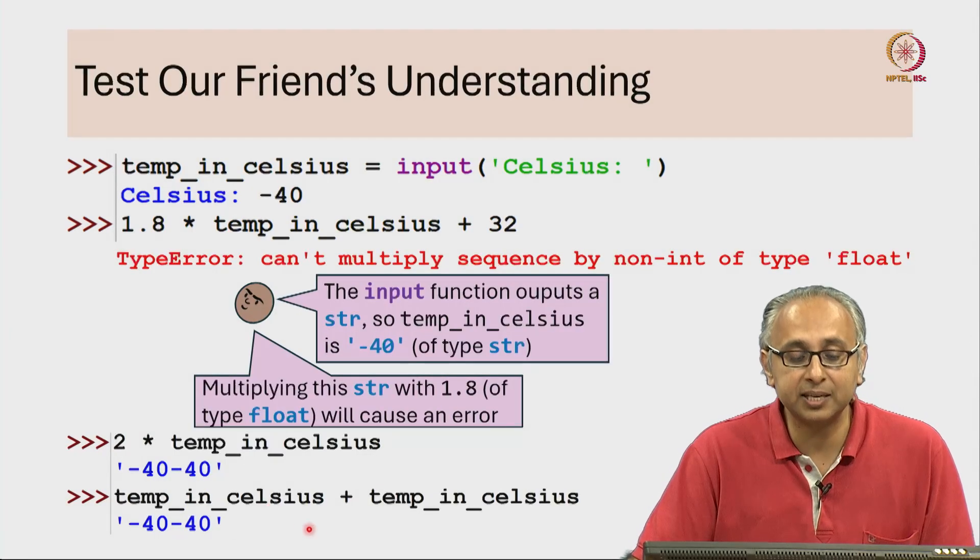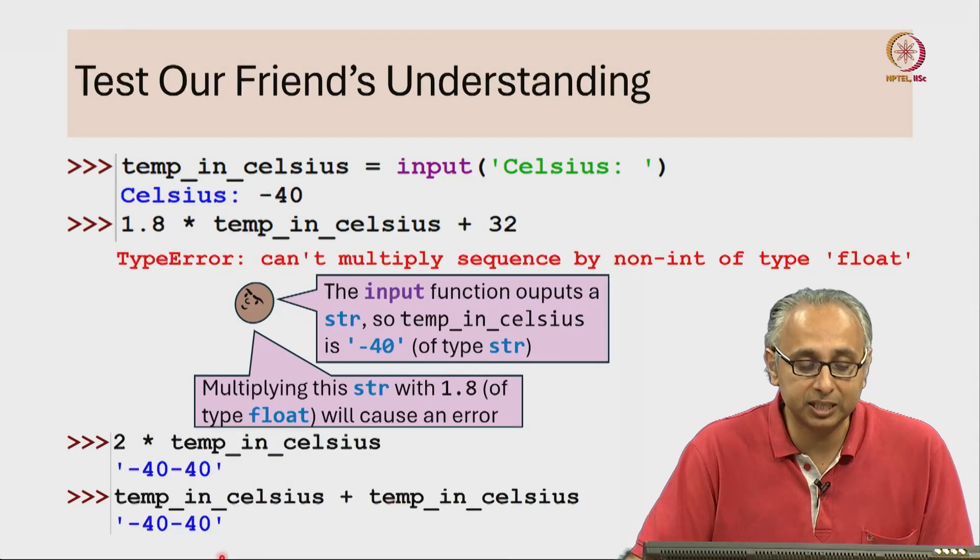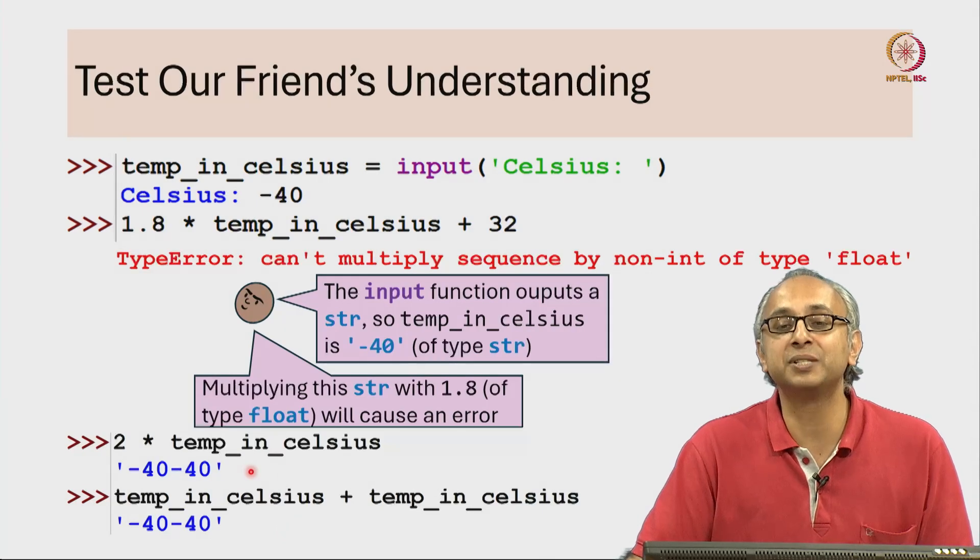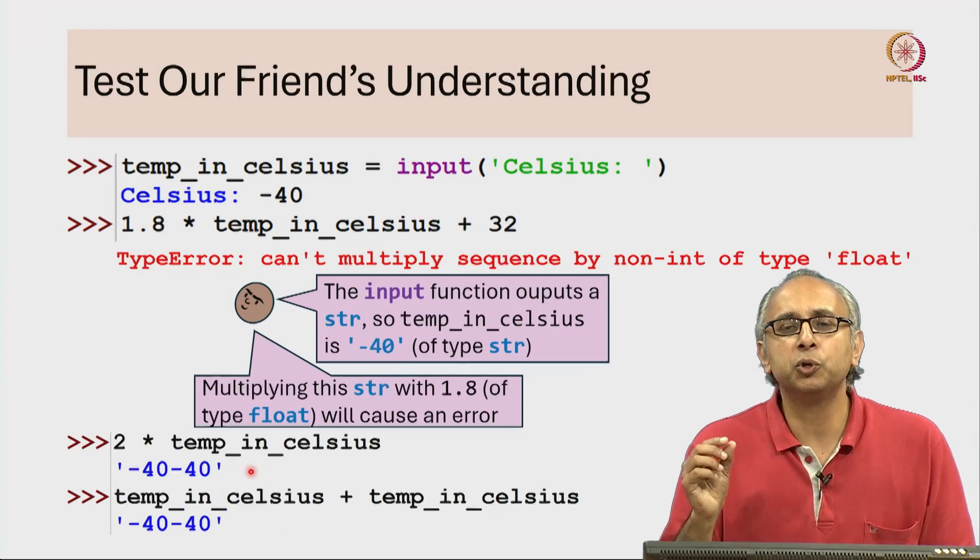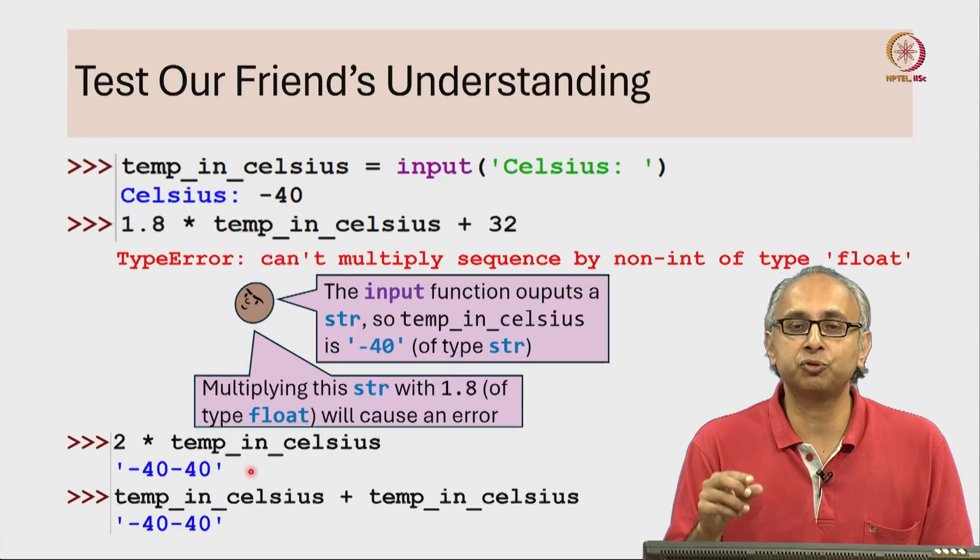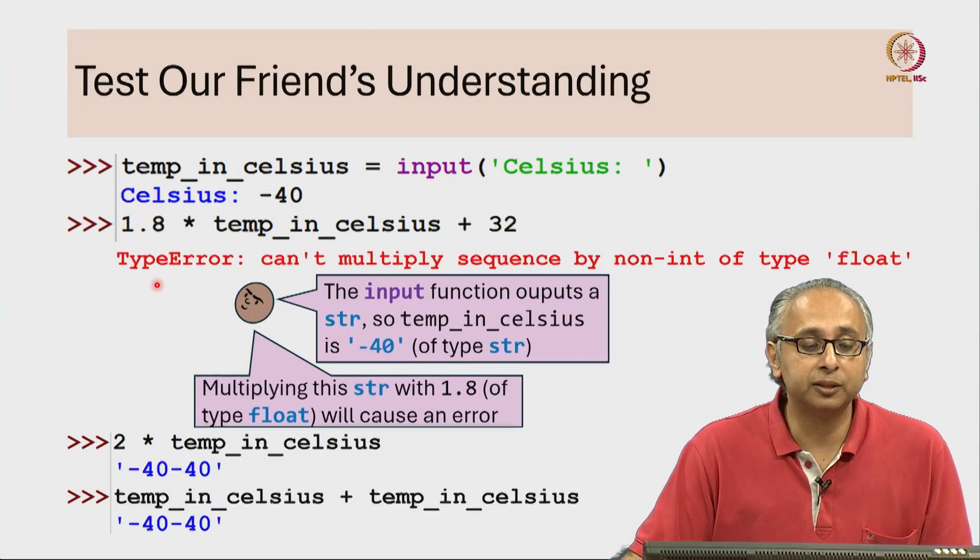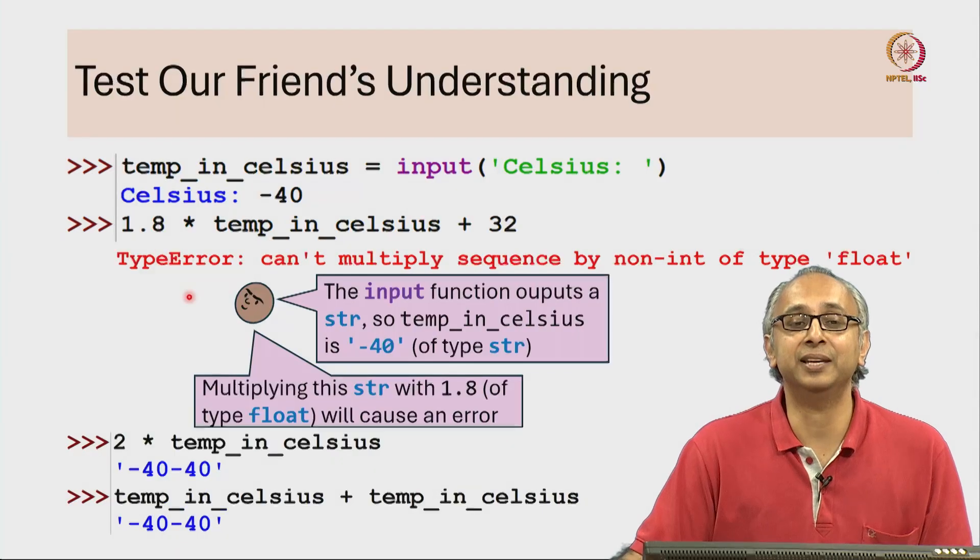So temp_in_celsius plus temp_in_celsius will just glue the two '-40's together, which is why 2 times temp_in_celsius gives '-40-40'. You can multiply strings with integers but not with floats, and that is the error.